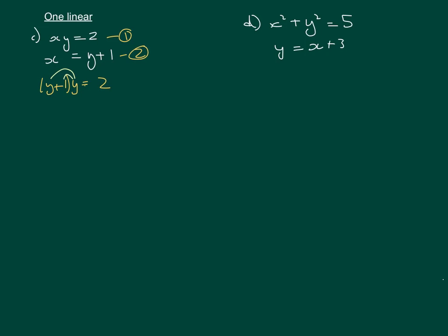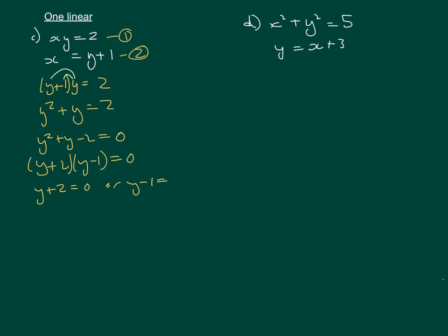Expanding the bracket gives y squared plus y equals 2. We need to solve it like a quadratic, so we make it equal to 0: y squared plus y minus 2 equals 0. We can factorize: two numbers that multiply to give minus 2 and add to give positive 1 are minus 1 and plus 2, giving us (y plus 2)(y minus 1) equals 0. So y equals minus 2 or y equals 1. We'll have two solutions because the graphs cross at two different points.